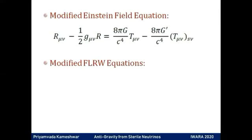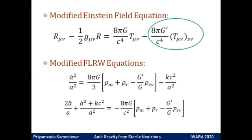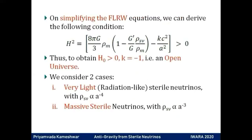We start with the modified Einstein field equations. The left-hand side is familiar, so is the first term on the right. The last term is that which has replaced lambda G_μν. Notice the negative sign in front of G prime. We can then write the pair of equations called the Friedmann-Lemaître-Robertson-Walker equations in a modified manner that give the scale factor evolution. On simplification of these equations, we derive a very important condition. We see that in order to obtain a positive value of Hubble parameter H0, we must have an open universe.